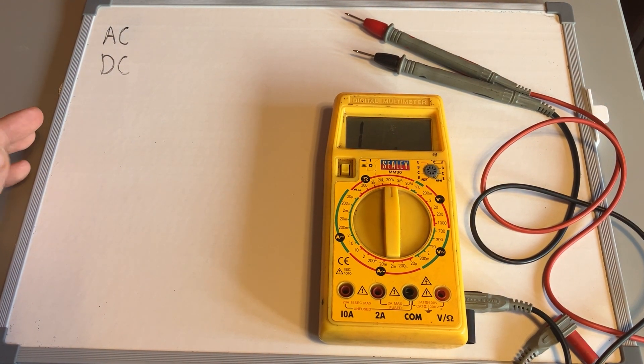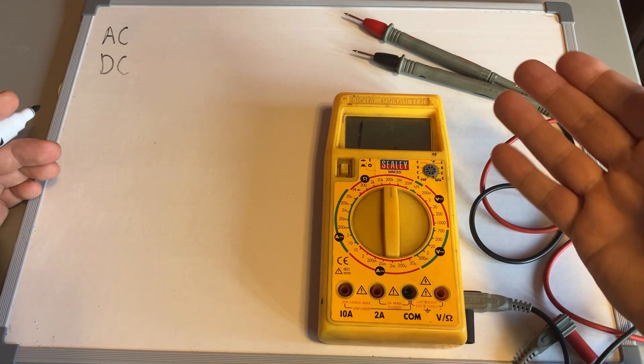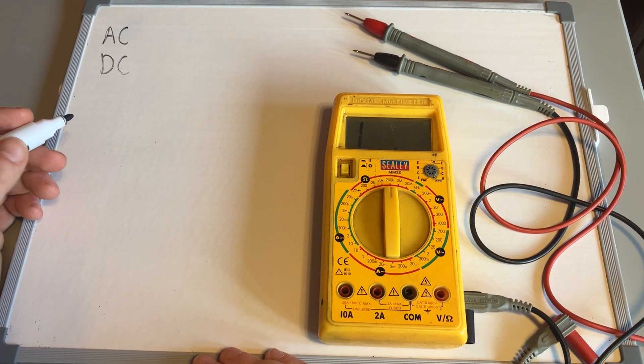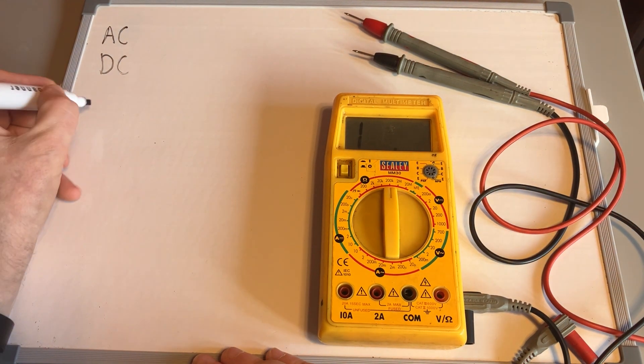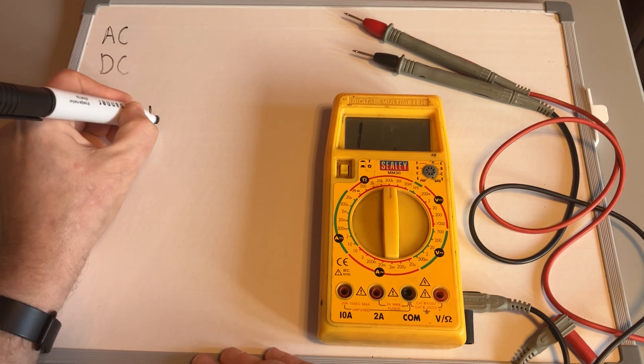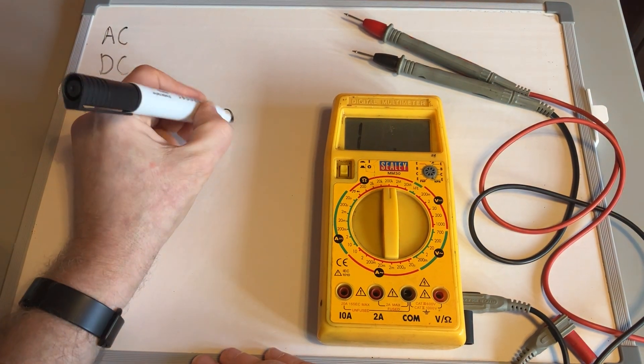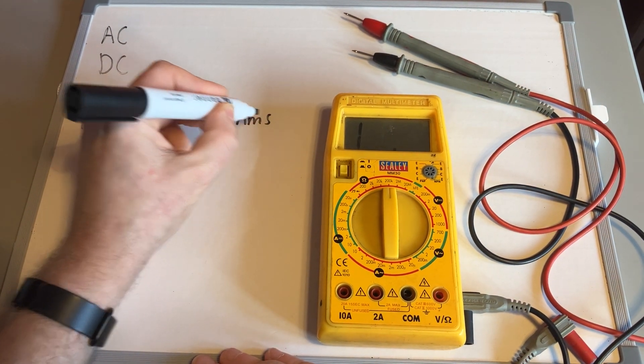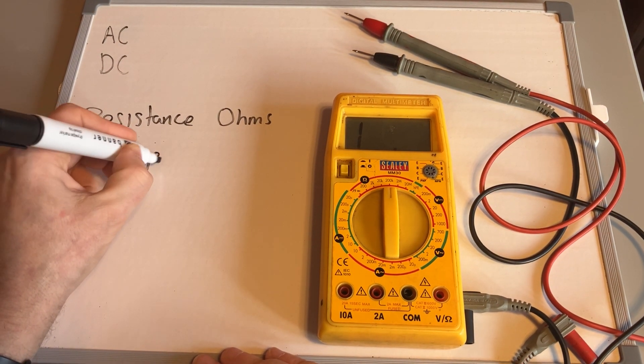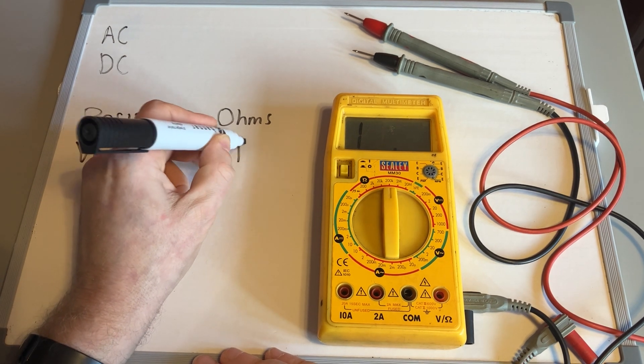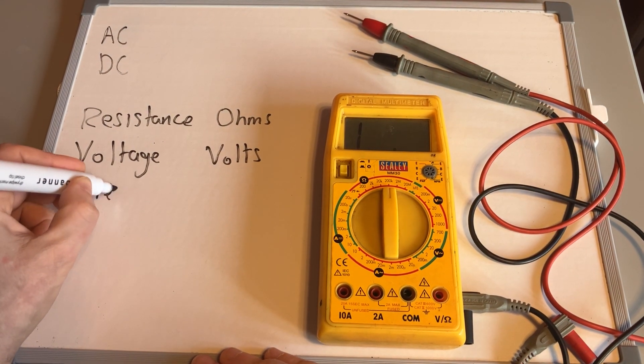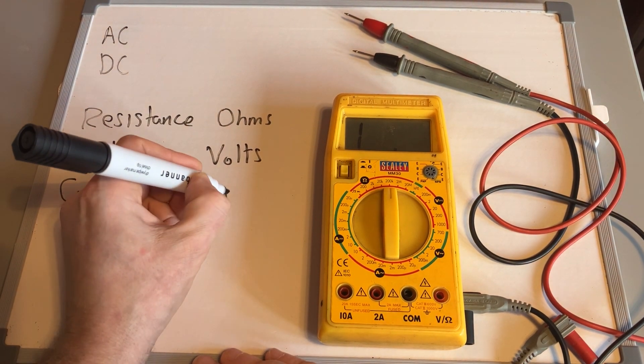With the multimeter itself, it'll test three different things. There are some other things, but the three major things it will do: it will test resistance in ohms, it will test voltage in volts, and it will test current in amperes.